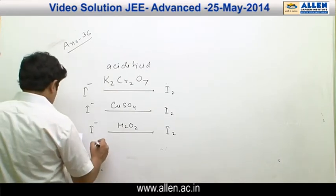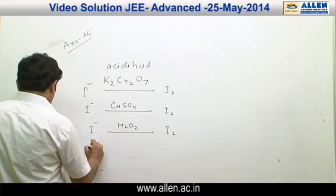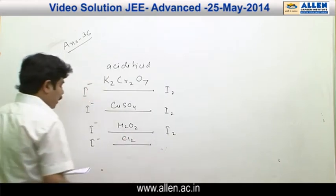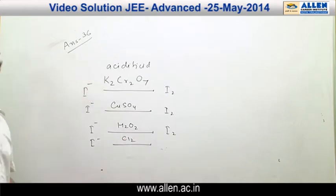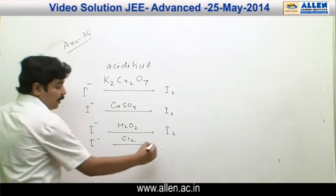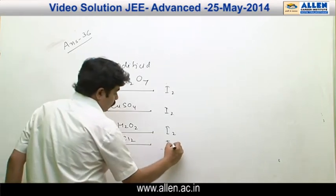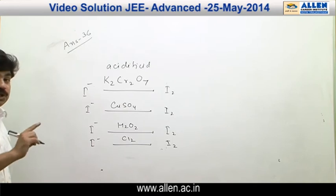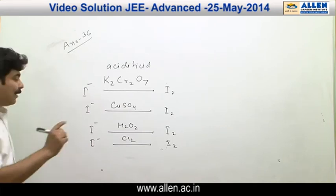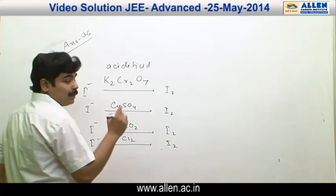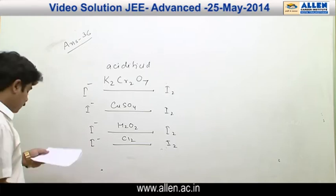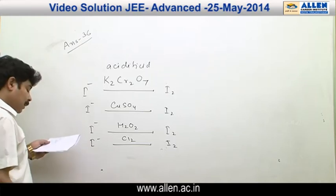When I⁻ reacts with Cl₂, I⁻ is converted into I₂ and the zero oxidation state of Cl₂ is converted into −1.